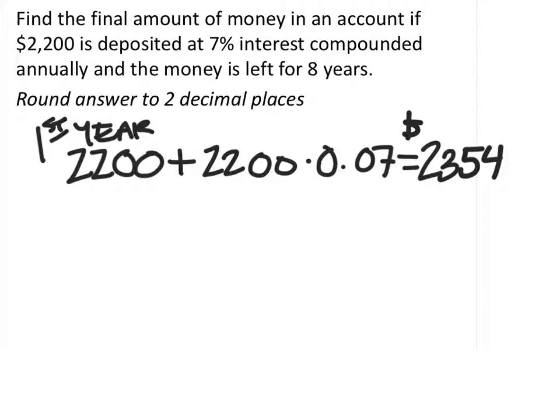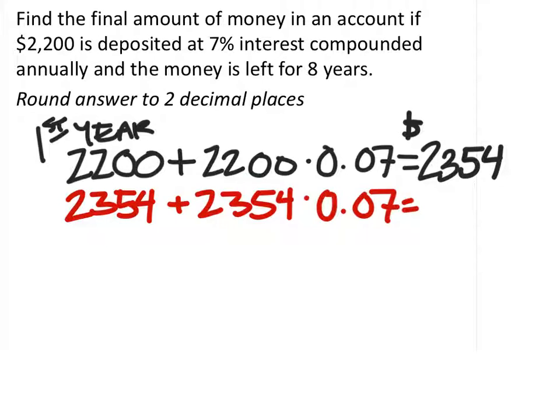So for the second year, since this is compounded annually, we need to take that $2,354 and repeat this process for the second year. Plugging this into a calculator would give us the answer very quickly at $2,518.78. Now that was for year two. For year three, we're going to use now this new value from year two, because again, this is compounded annually.